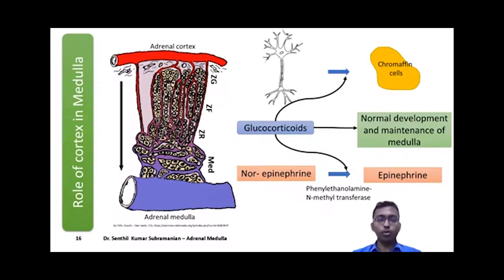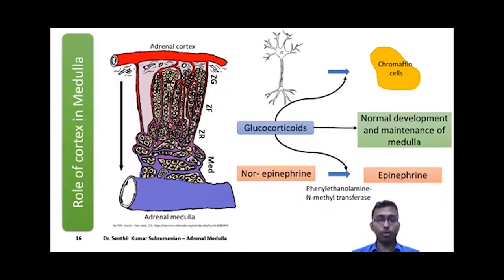The importance of cortisol in medullary function is understood in the case of 21-beta-hydroxylase deficiency. This is an enzyme involved in cortisol synthesis. In this condition, cortisol production is reduced, leading to adrenal insufficiency. Since cortisol is reduced, the functions and secretions of the adrenal medulla are also reduced. So even in 21-beta-hydroxylase deficiency, which is primarily a defect in the adrenal cortex, adrenal medulla function also decreases.